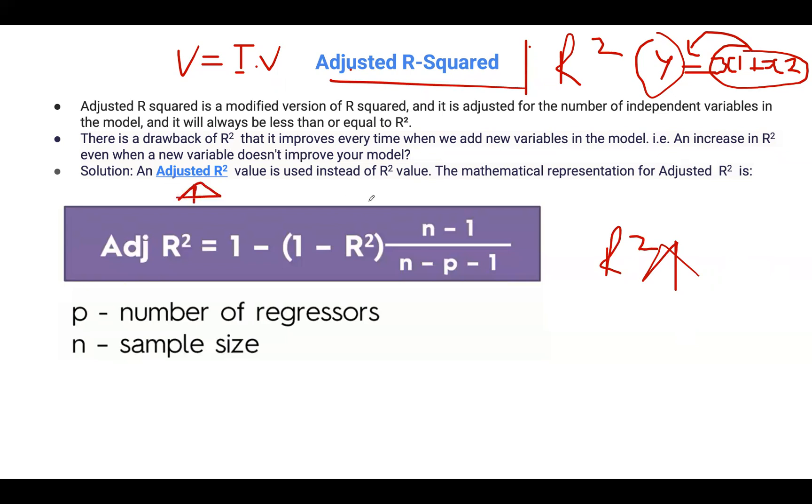This adjusted R-squared penalizes the model for adding more independent variables into the equation, especially those variables that do not fit the model. Formally, the mathematical representation of adjusted R-squared is given by this formula, where P is the number of regressors.